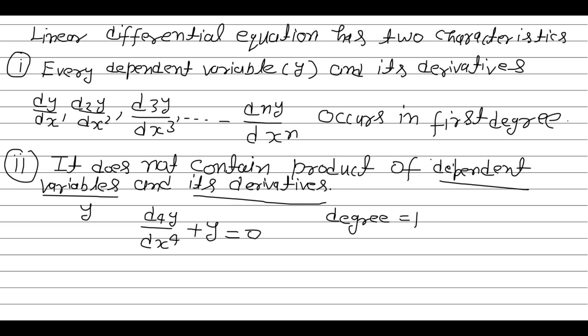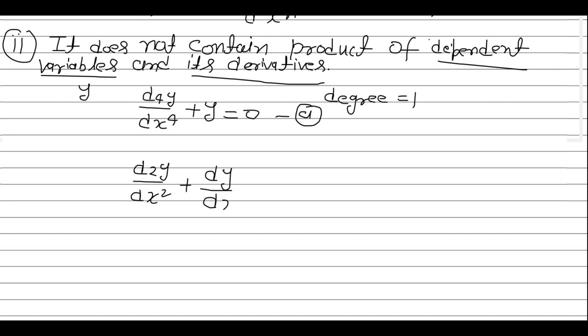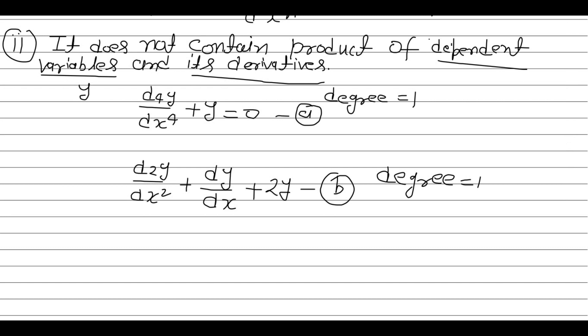Let us see another differential equation. I am writing d2y/dx2 + dy/dx + 2y = 0. This is also a linear differential equation because the degree is 1 and it does not contain the product of the dependent variable y and its derivatives. So again this is an example of a linear differential equation.